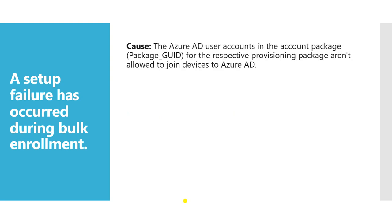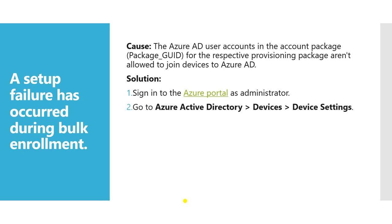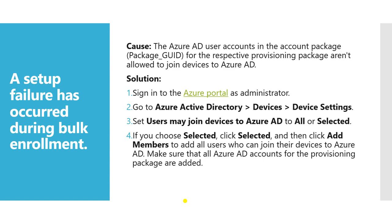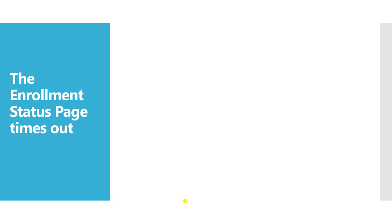A setup failure during bulk enrollment can occur because in Azure AD, the user account for the provisioning package (package_quit) is not allowed to join devices to Azure AD. The solution is to log into the Azure portal as an administrator, go to Devices > Device Settings, find 'Users may join devices to Azure AD', change it to All or Selected, and if Selected, add the appropriate members or users.